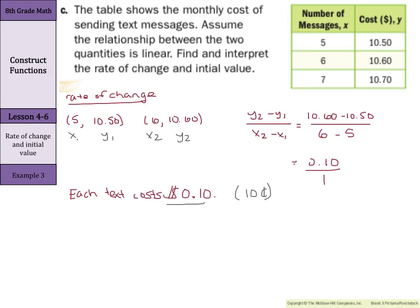Now we're left to find our initial value. We're going to solve this similarly to example two. Let's take our slope, which is 10 cents, 0.10, and take any point. You can pick the 5, 10.50, 6, 10.60. Just to change things up, let's pick the 7, 10.70. But you could pick any of the three points. Now write our slope intercept form, y equals mx plus b, and substitute in.